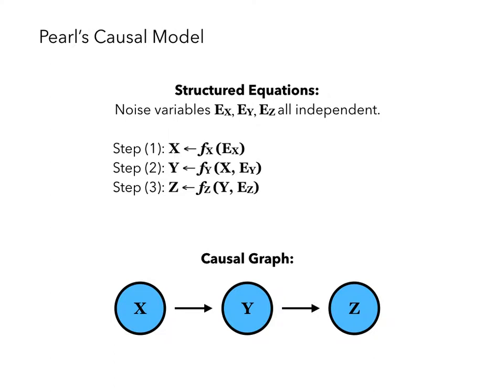We will do a quick introduction to Pearl's causal model. So Pearl defined the structured equation model. Let's look at an example to see how this model works. First some noise variables EX, EY, and EZ are created independently. In step 1, X is set to be a deterministic function of its noise variable EX. Y is set to be a deterministic function of X and its noise variable EY. Then Z is set to be a deterministic function of Y and its noise variable EZ.